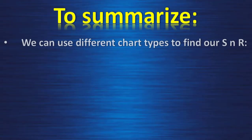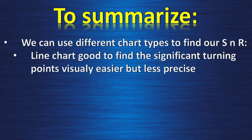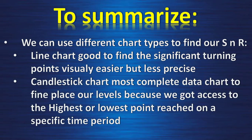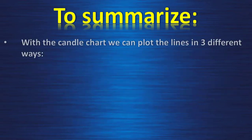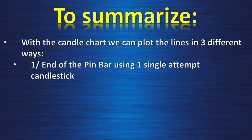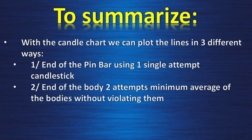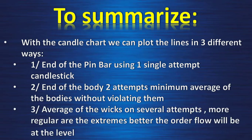To summarize: we can use different chart types to find our support and resistance. Line charts are good to find significant turning points visually, but are less precise. Candlestick charts provide more complete data to fine-tune the place of our level because we get access to the highest or lowest point reached on a specific period of time. With the candlestick chart we can plot the line in three different ways: the end of the pin bar wick using a single nameable candlestick; the end of the body with two attempts minimum; and the average of the wicks on several attempts — the more regular the extremes, the better the order flow at the level.